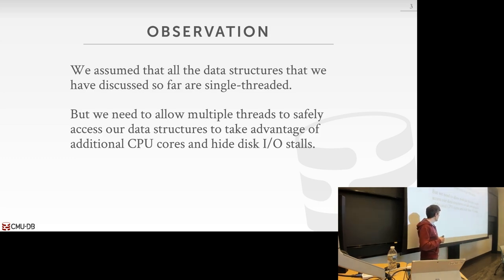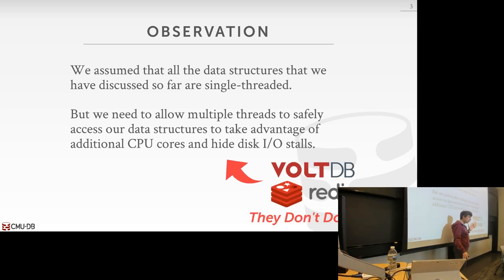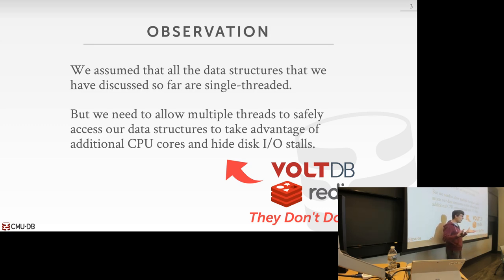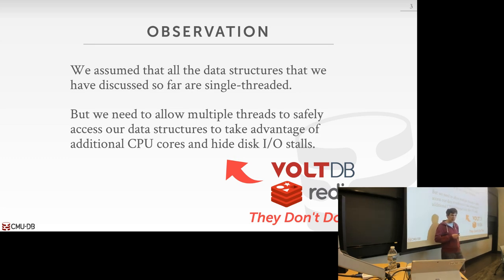So for today we bring back multiple threads and ask: what do we need to do to protect ourselves? Everything we'll discuss is how most database systems actually work. Some systems, however, don't do any of this and only allow single threads to access data structures — yet still get really good performance. VoltDB and Redis are the two most famous examples. Redis is a single-threaded engine. VoltDB is multi-threaded but partitions the database so every B+ tree is accessed by only one thread, avoiding latching entirely. This complicates scaling to multiple cores or machines, but we'll cover that later.